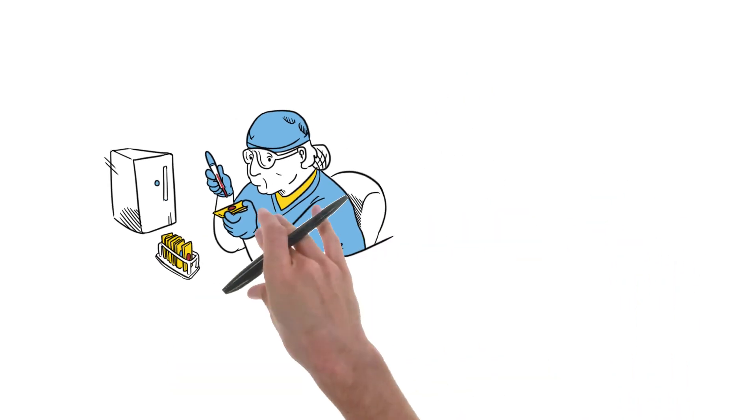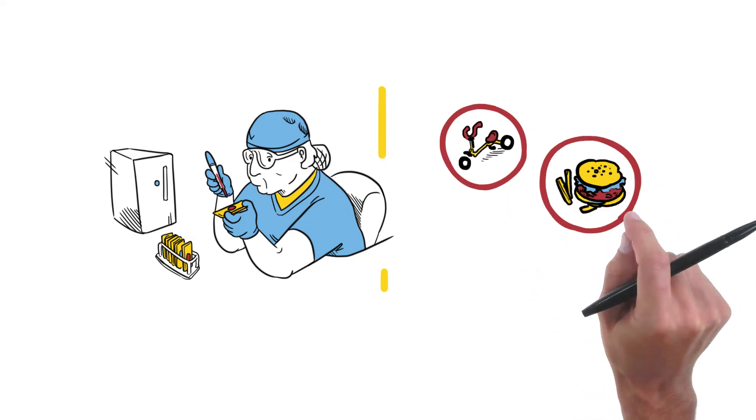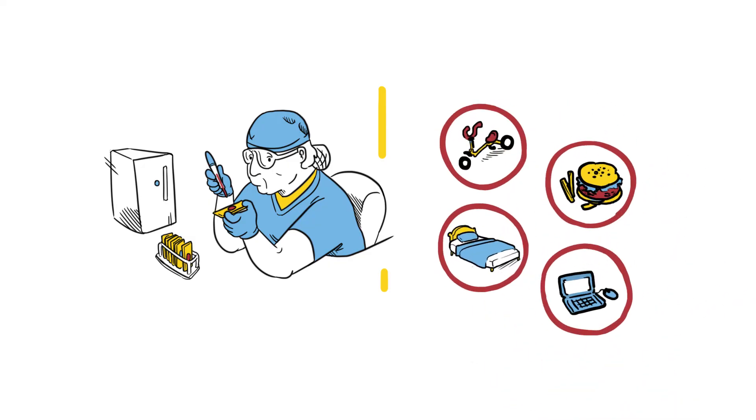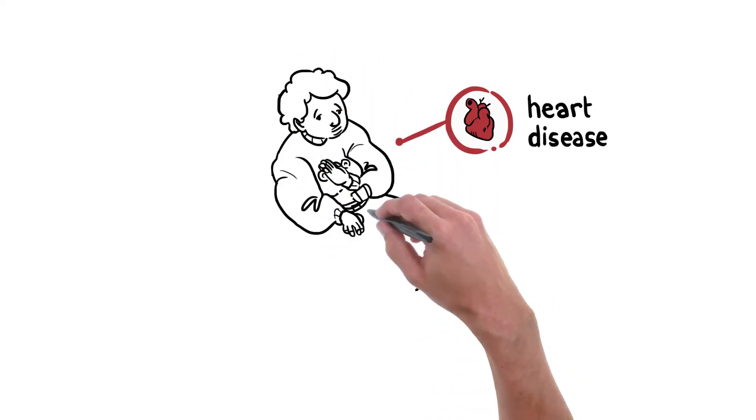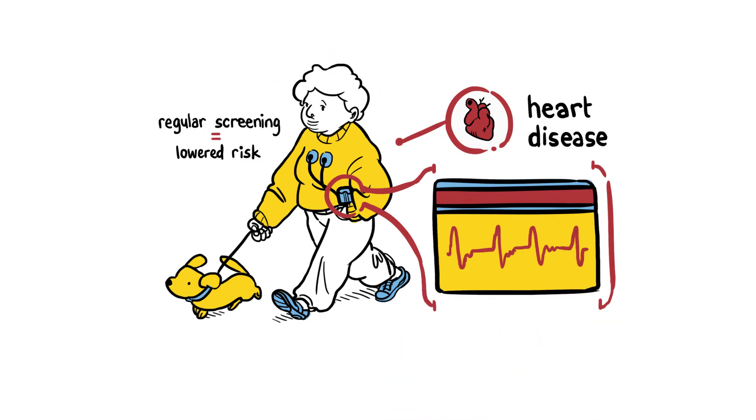The specifics of your genome are just part of the story. Your daily habits and actions are just as important in managing health. Some inherited diseases can be treated or prevented by taking certain medications or making a lifestyle change.